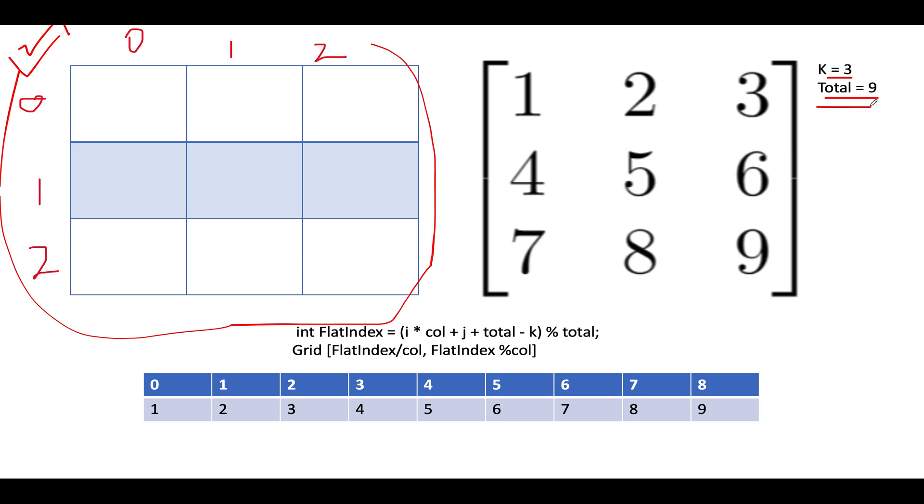And the formula for identifying the target element for each index would be given by i into column plus j plus the total number of elements that I have minus k. So if you are able to identify the target flat index element then your work is done.